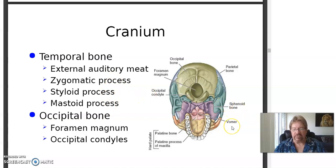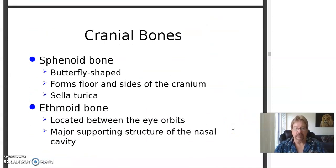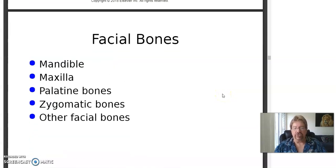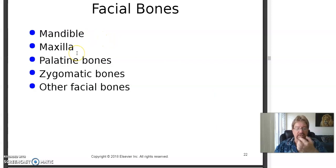Sphenoid bone, butterfly shaped, forms the floor and sides of the cranium. Sella turcica is a little indentation where the master gland, the pituitary gland, sits down in it like a ball. The ethmoid bone is another one that's deep in there, hard to see. Those are the bones of the cranium. Facial bones again: the mandible is the jawbone, maxilla upper teeth, palatine, zygomatic arches, and some others.